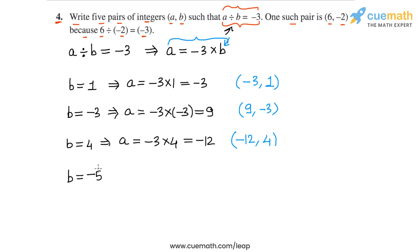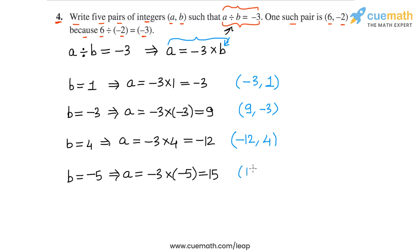Now let's take b equal to minus 5. For b equal to minus 5, a will be minus 3 times minus 5, which is equal to 15. So our fourth pair of integers is a equal to 15 and b equal to minus 5.